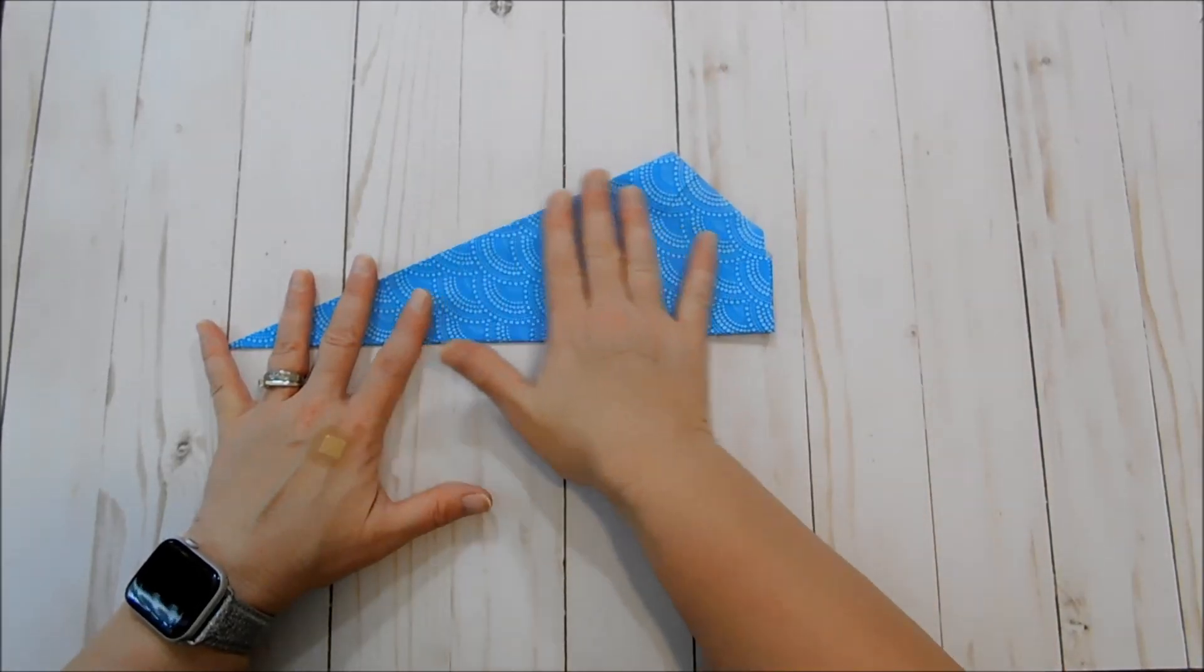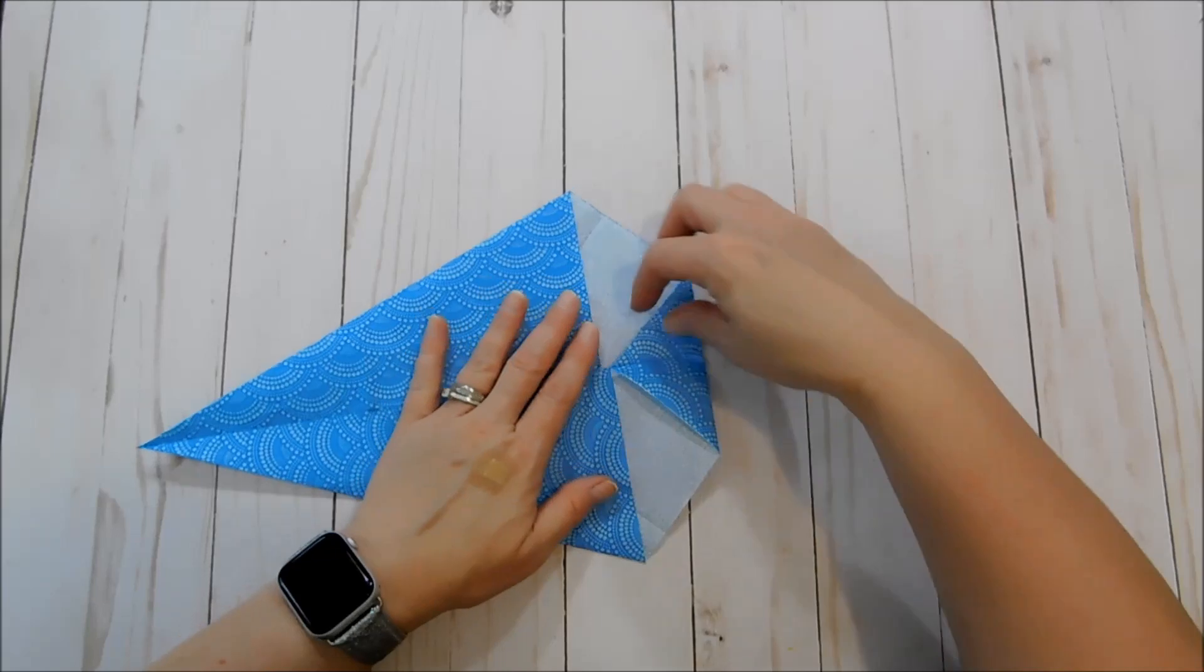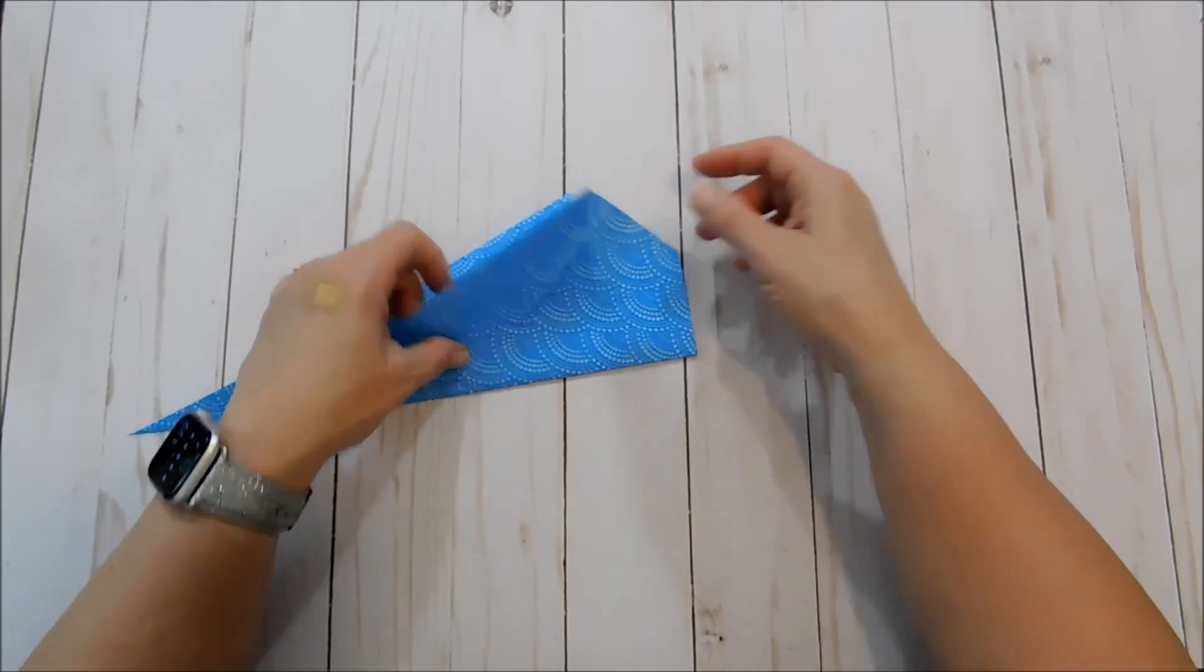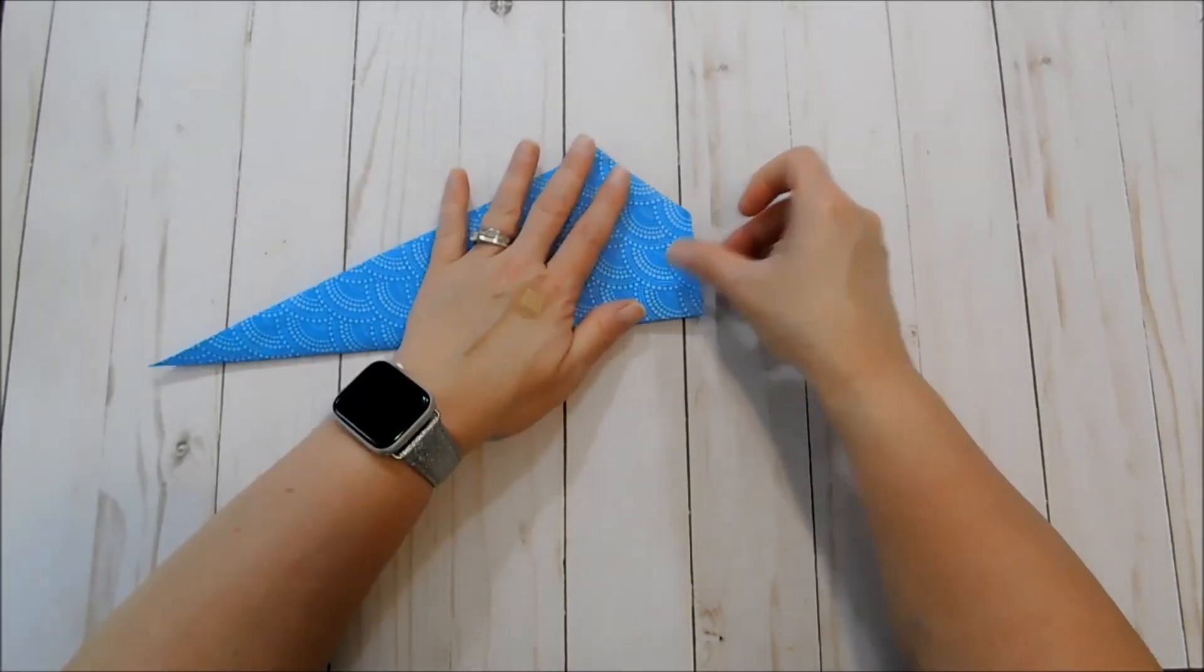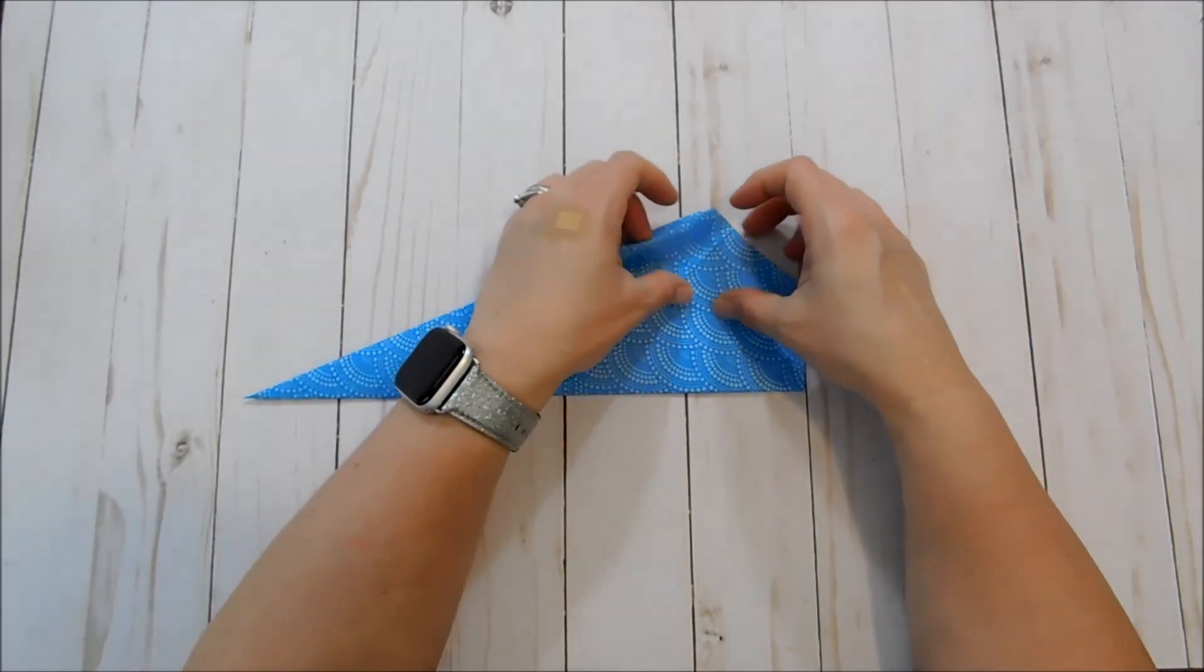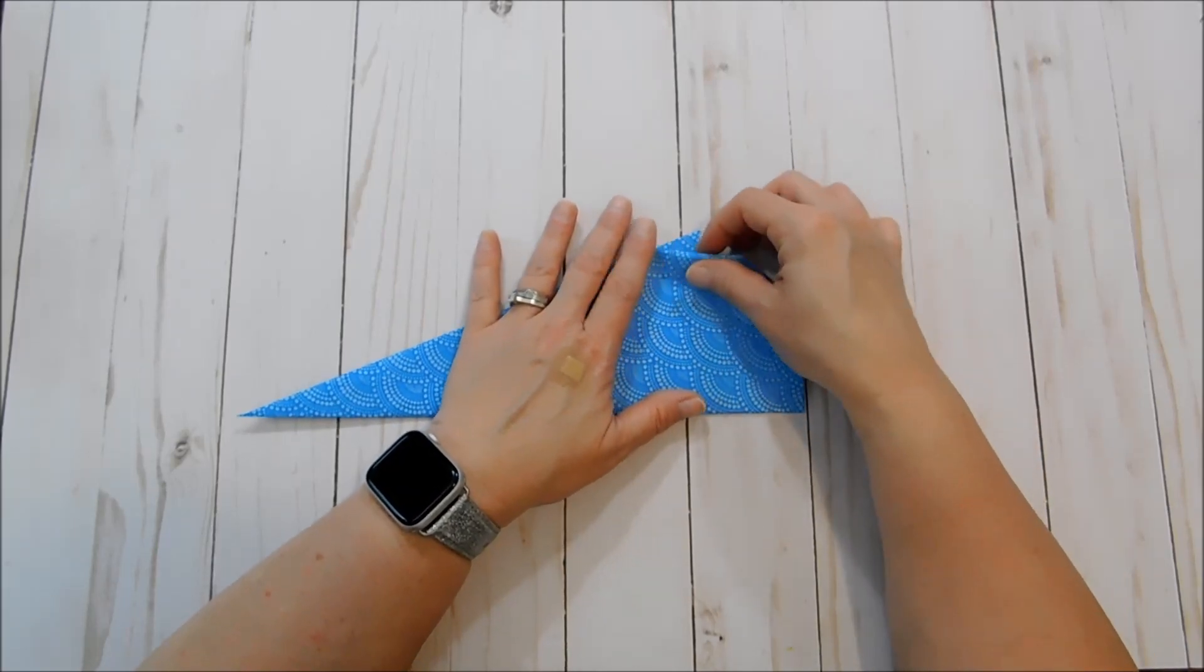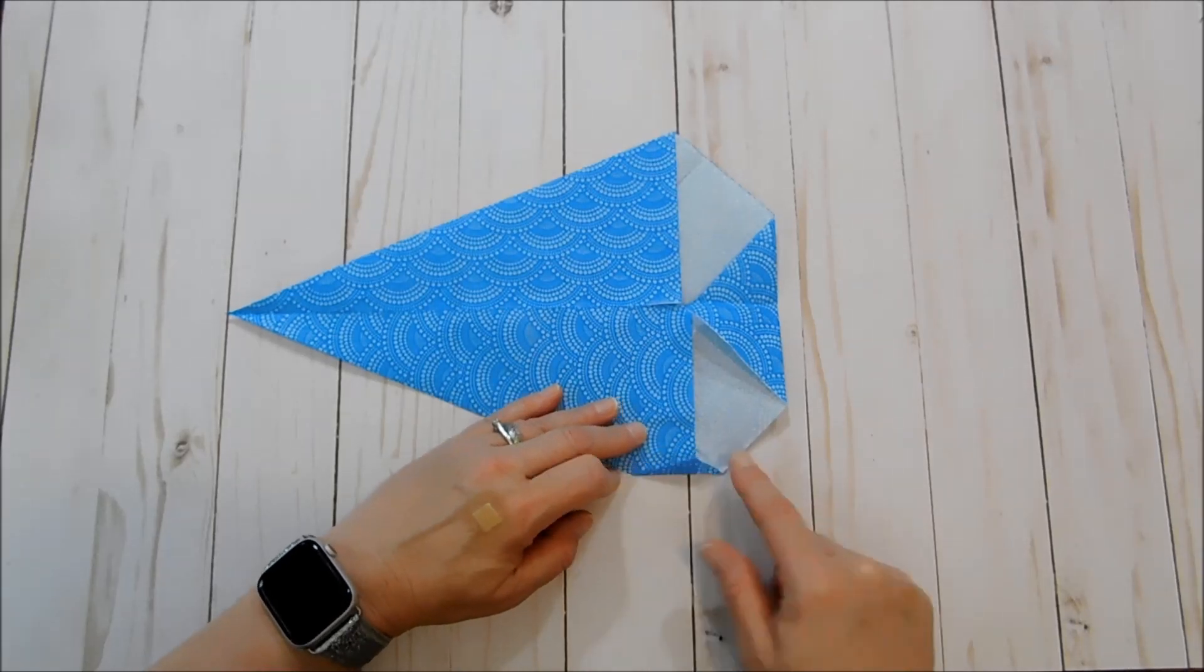Get everything lined up the best you can. And you can see here my front doesn't line up exactly right. I want to even that up a little bit because I don't want that peeking out from behind. Okay there we go. And now for this point here I'm just going to fold that under maybe a half inch or so. I'm going to try to unfold it and get a little better fold there.